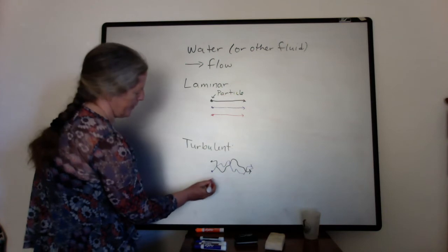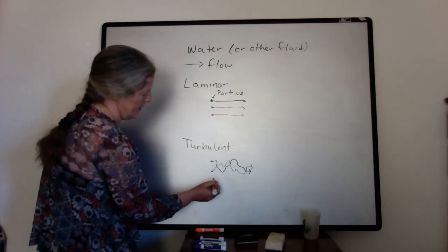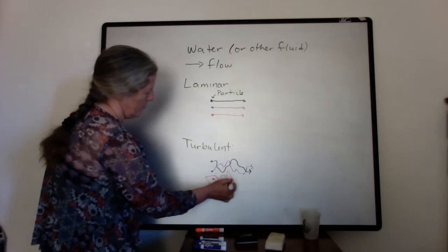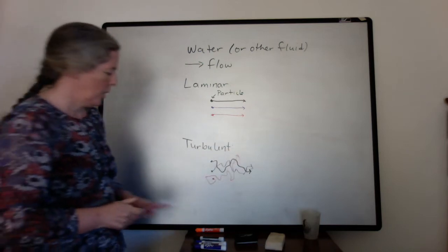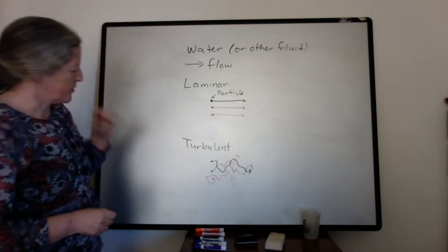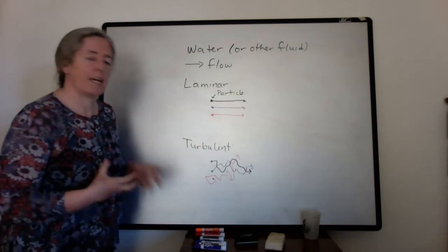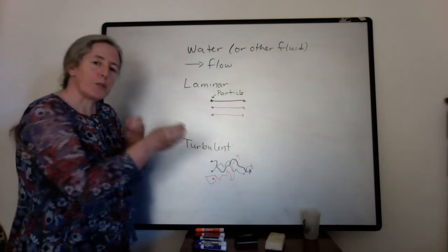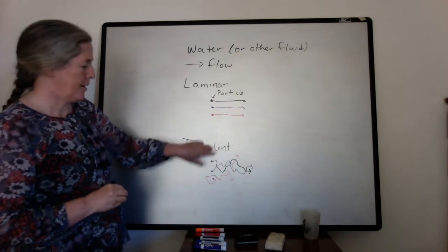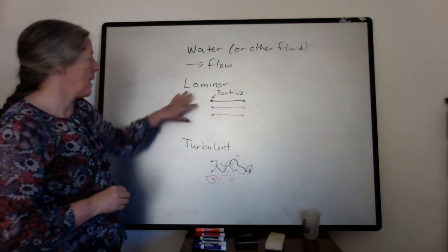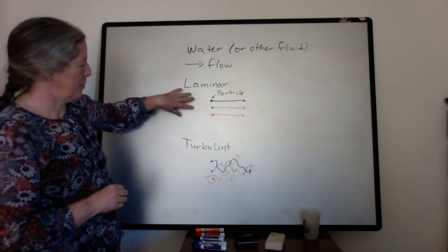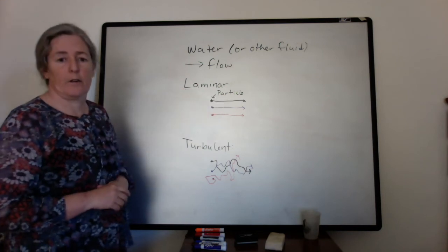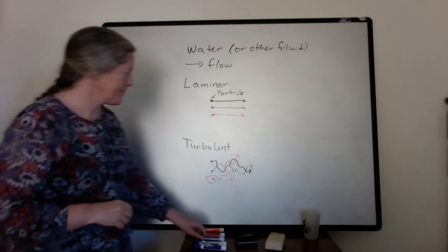And our red particle here would have a third path. This turbulence comes from the extra energy in the flow and bursts of flow that are at different speeds that cause this mixing. In contrast, a laminar flow is all parallel and going downstream.